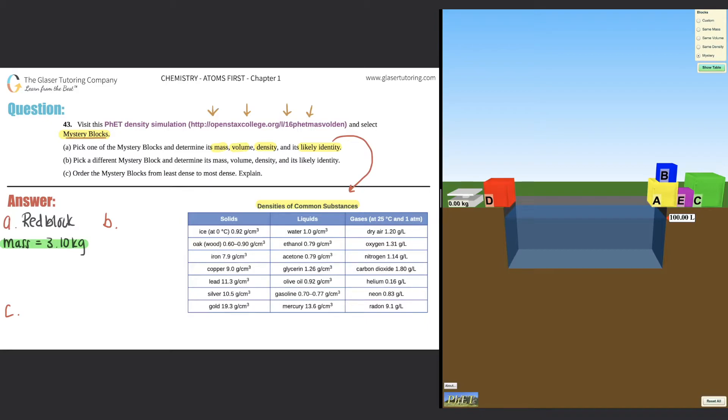So the mass of the red block was 3.10 kilograms. Now we have to find the volume. Once again, we don't have a meter stick or a ruler, so we can't do length times width times height, but we can do volume by displacement. Quickly, I'm just going to put it over here. If you want to do volume by displacement of any object, it's always final VF, final volume minus initial volume. And the initial volume is the volume that is in the container before you add your blocks. In this case, if you look on the right-hand side, the volume of water in this container is 100 liters. So your VI will always be 100 for this example.